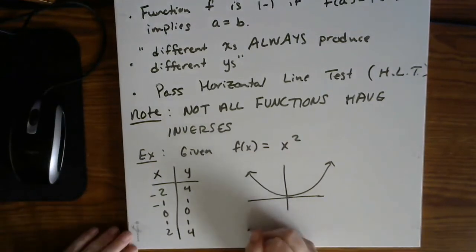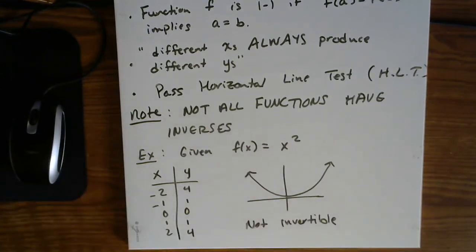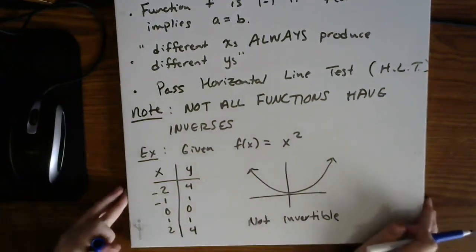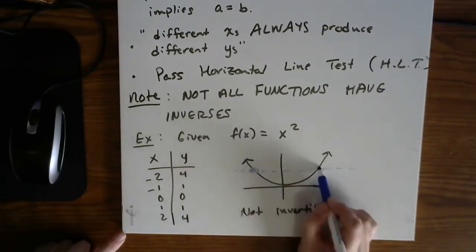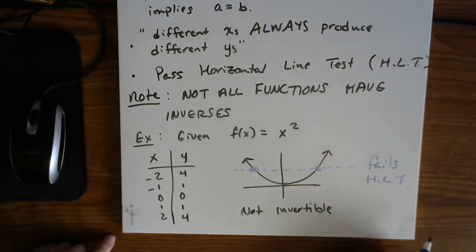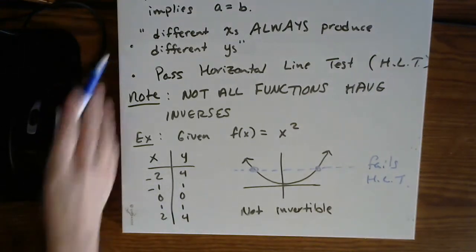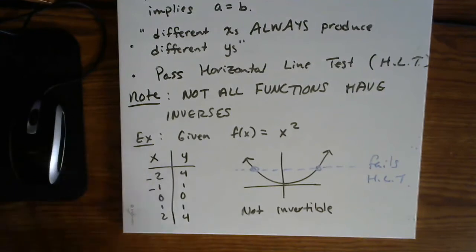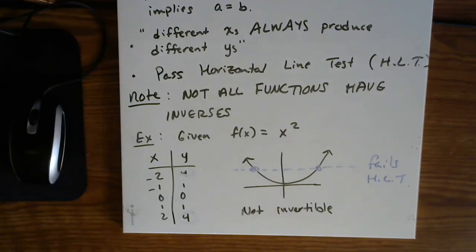So you will notice that this is not invertible, which is another way of saying it does not have an inverse for two reasons. The first one, probably, in my opinion, the most obvious as a visual learner is that it fails the horizontal line test. The other reason is because, as we stated in English, if you have different x values, they better produce different y values, and they did not.